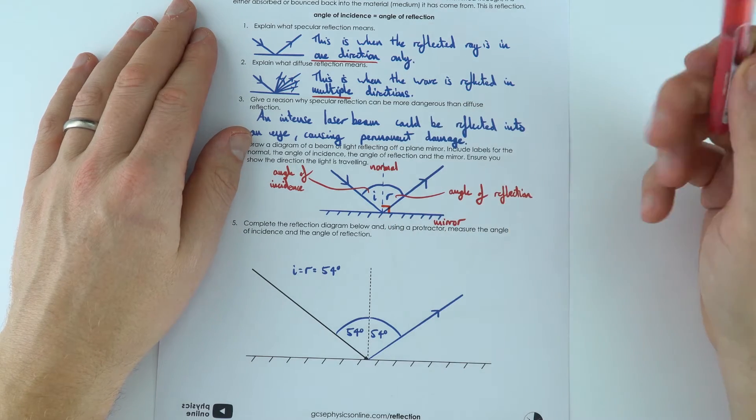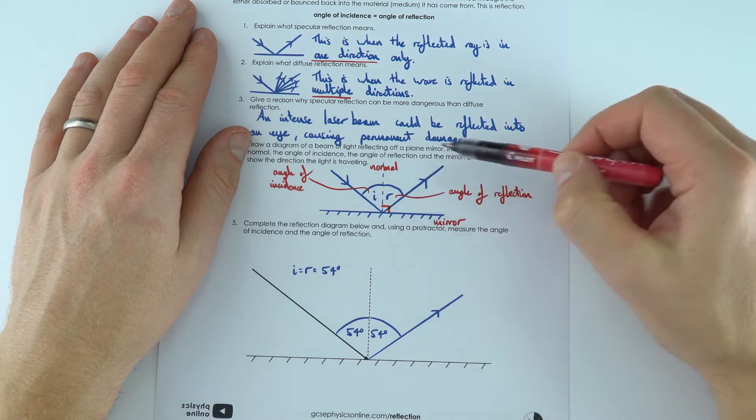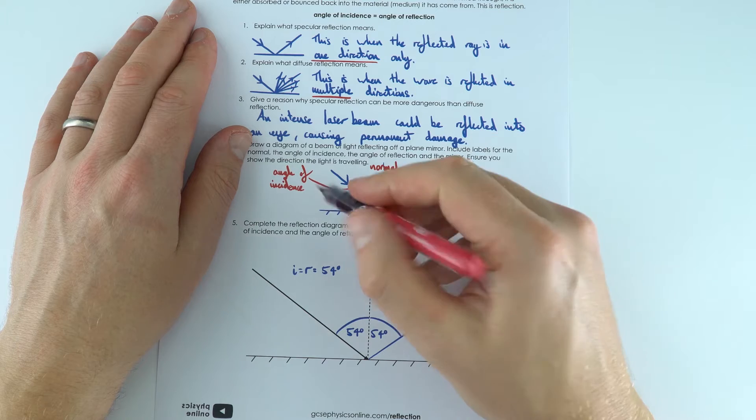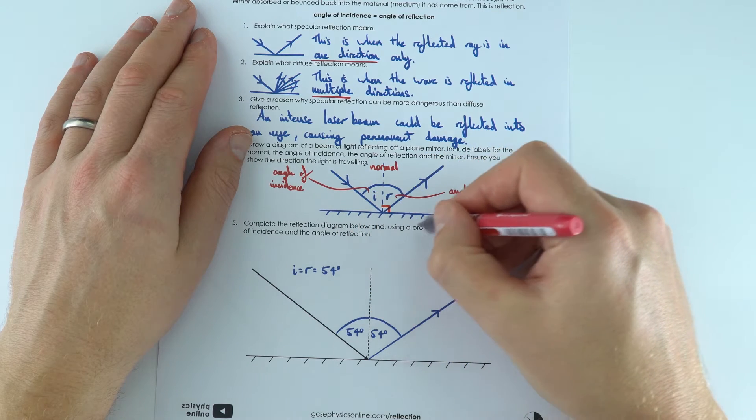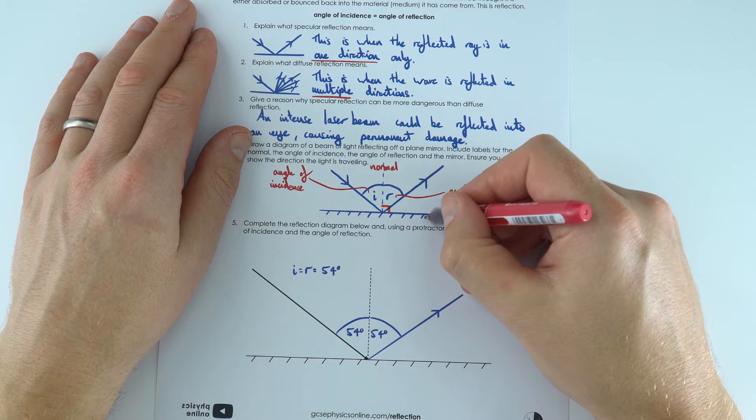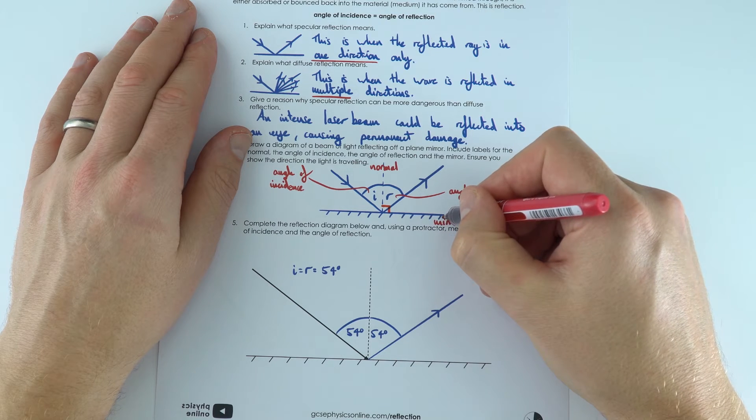If you've got a reflected ray of light, the angle of incidence is equal to the angle of reflection. The dashes down here just show that this is a mirror. This one here is our shiny side on the top, and this one here shows the rough side underneath.